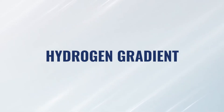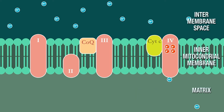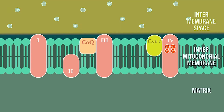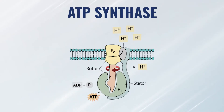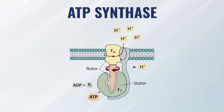The reason we're doing that is to create another gradient — a hydrogen gradient. As we move electrons from one step to the next, we're also releasing hydrogen into that intramembrane space. As that space fills with hydrogen, we get a high concentration, and it wants to move down its concentration gradient. ATP synthase is a pore or opening in the membrane that allows hydrogen to move from high concentration to low concentration.